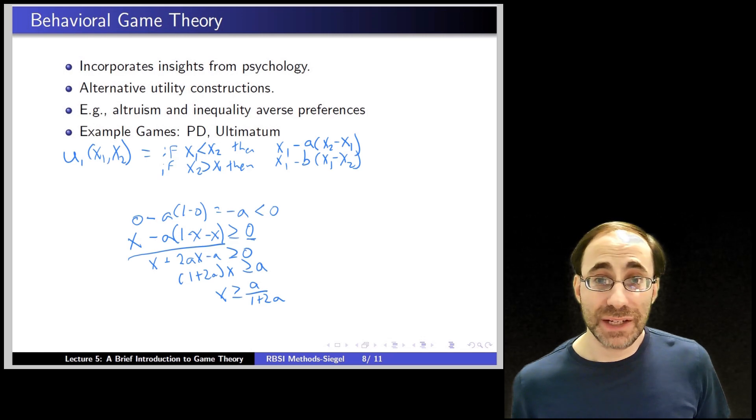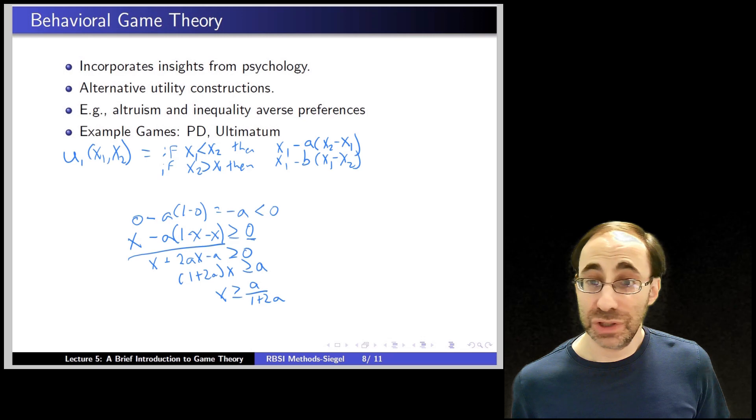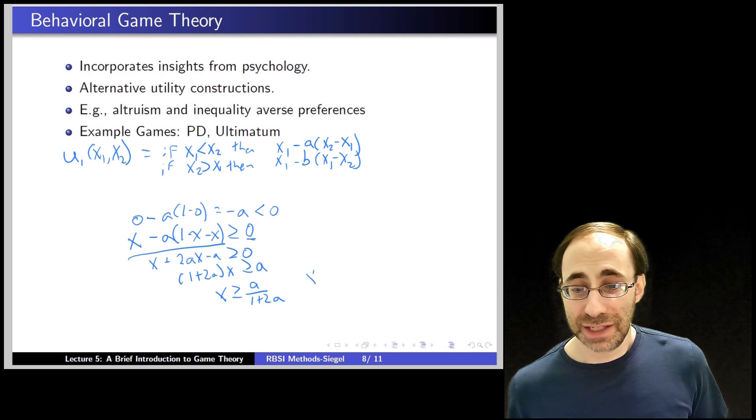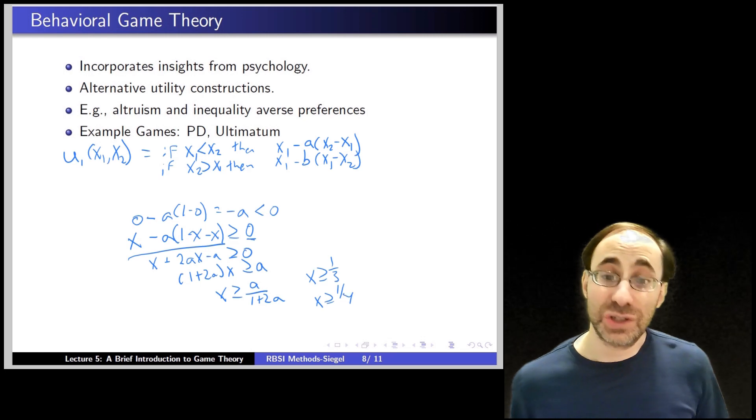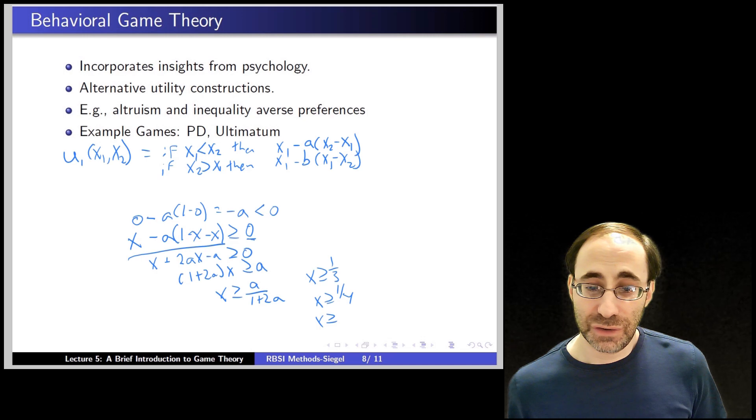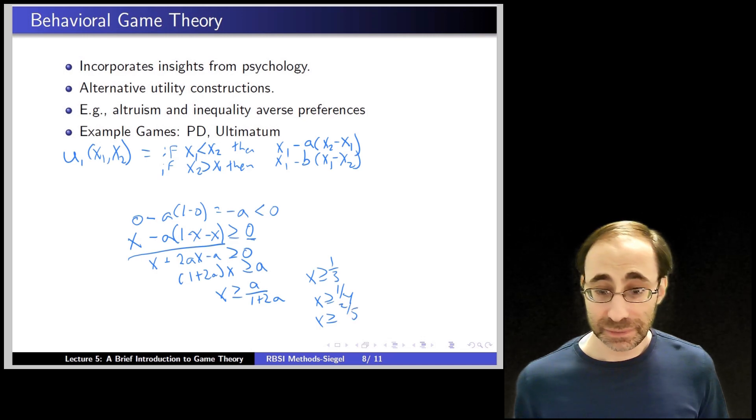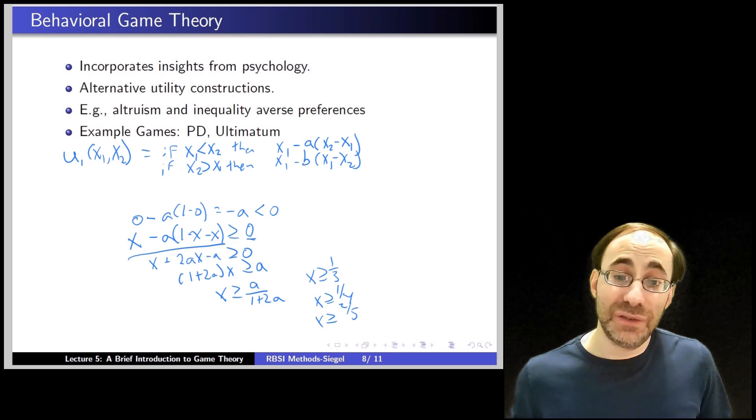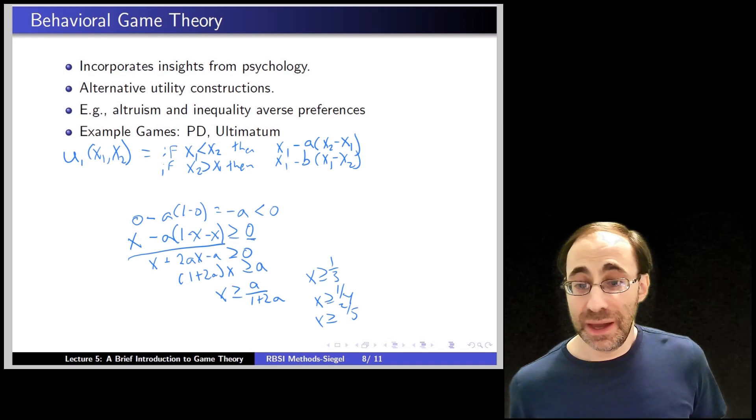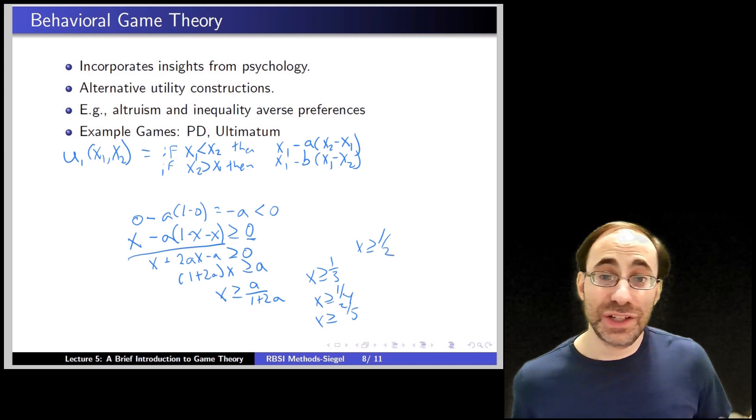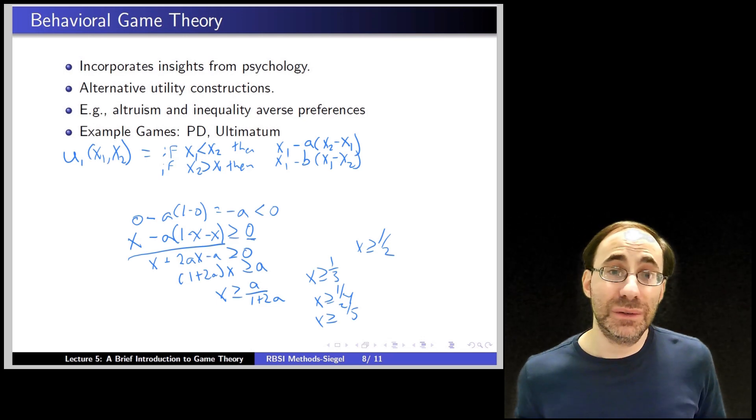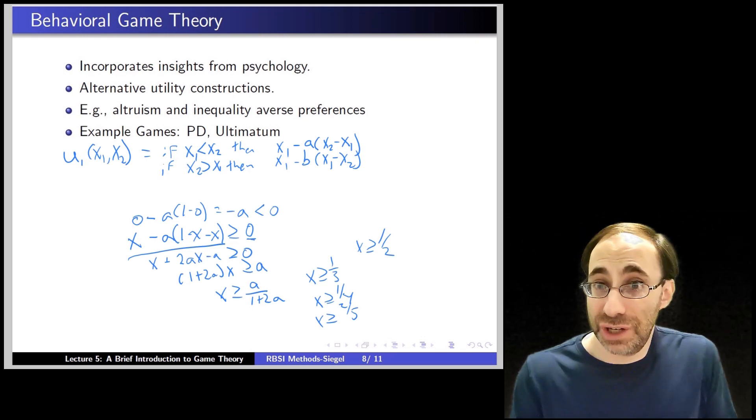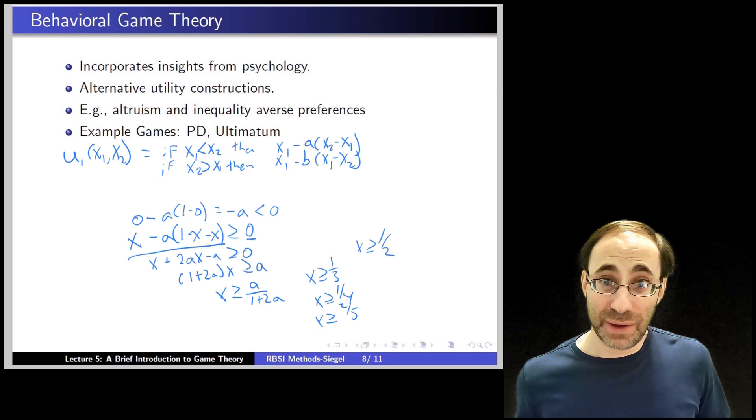We can plug in numbers to get a sense of what this looks like. If a is 1, then you get 1 over (1 plus 2), which is 3, so x has to be greater than or equal to 1 third. If a is 1 half, you get x is greater than or equal to 1 quarter. If a is 2, you get x is greater than or equal to 2 over 5, and so on. As you care more about the inequality, they have to give you more. And in the limit, as a goes to infinity, x has to be greater than or equal to 1 half. So as you care about any differences maximally, they must give you an equal share, because otherwise you'll say no.